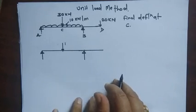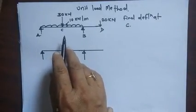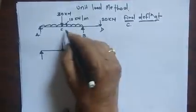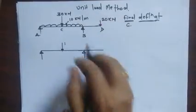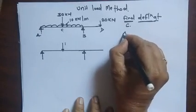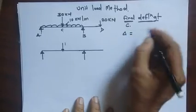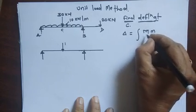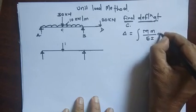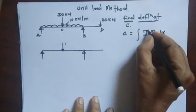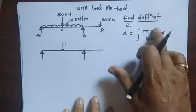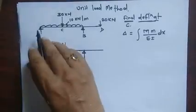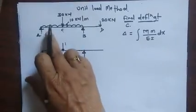Welcome dear students. Today we analyze the beam — we are going to find the deflection of a beam at C using the unit load method. The formula is: deflection at any point equals the integration of M times m divided by EI times dx, where M is the bending moment due to external loading and m is the bending moment due to the unit force at the point where we desire the deflection.